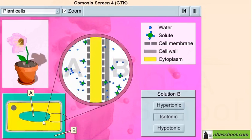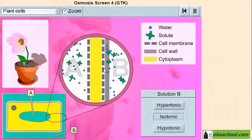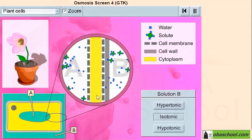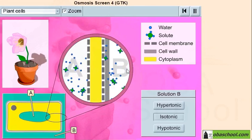So this is solution A or the vacuole, and this is the cell membrane which is semi-permeable, allowing only water to enter and leave the cell. And here is the cytoplasm, and next to it we have the cell wall. And right here we have solution B.